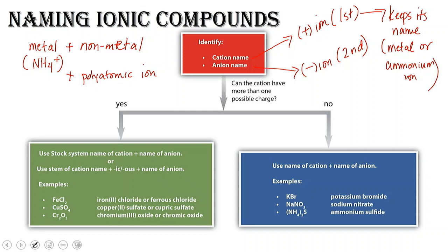Now for the cation: if this cation has more than one charge — if it's singly charged, meaning it only has one type of charge, whether it's a plus two, a plus one, or a plus three — and it can't have another type of charge, we're going to keep its name.